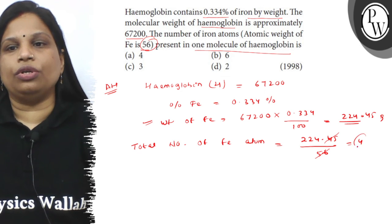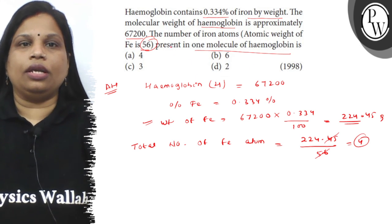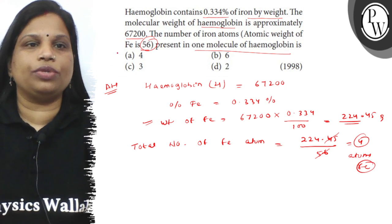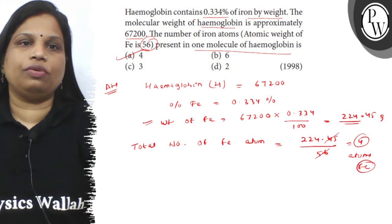And this is equal to 4. So the hemoglobin in one molecule contains four atoms of iron. So the correct option is A. I hope you understood well, best of luck.